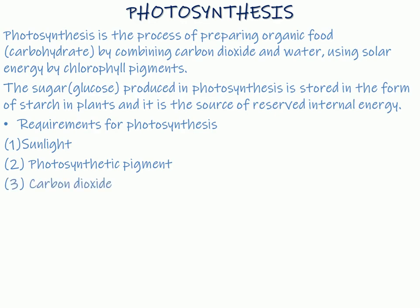Third, carbon dioxide. All the plants need carbon dioxide to form carbohydrates. The carbon dioxide is obtained by the plants from the atmospheric air. In the terrestrial plants, the carbon dioxide enters into the cell of leaves through tiny pores called stomata, which always remain present on the surface of leaves.